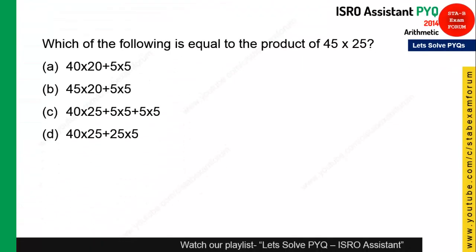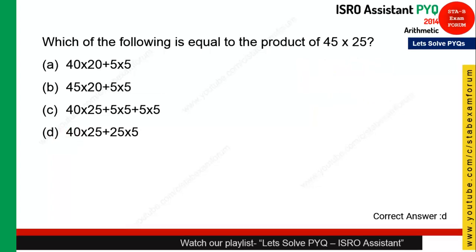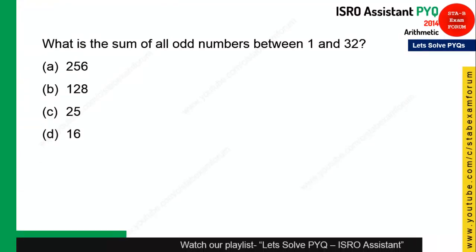The next question is very simple — you can solve it in about 5 seconds. Which of the following equals the given product? Just break 45 as 40 + 5, then multiply by 25: (40 + 5) × 25 = 40 × 25 + 25 × 25. Option D is the right answer.